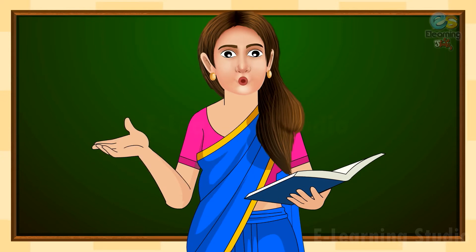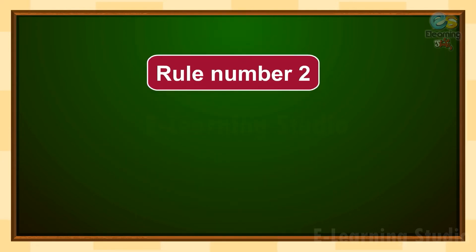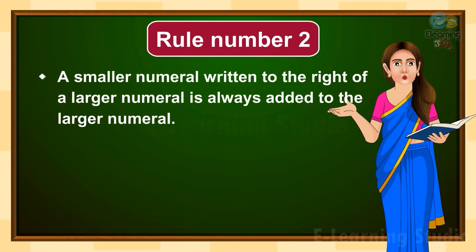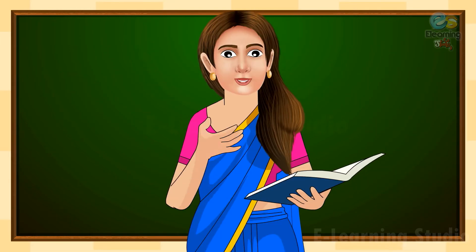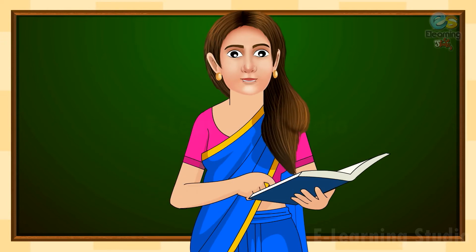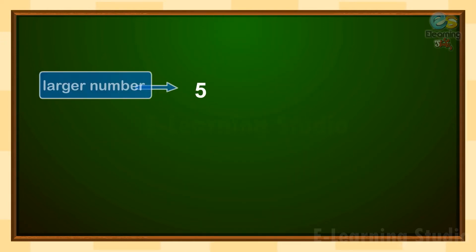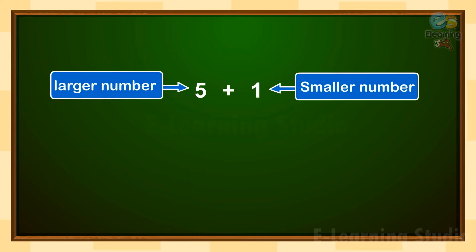Now let's move to the next rule. Rule number two: a smaller numeral written to the right of a larger numeral is always added to the larger numeral. Here you can see, five is the larger number and one is the smaller number. According to our rule, if the smaller numeral is on the right side of the larger numeral, we add them. We get six, and in Roman numbers this is VI.